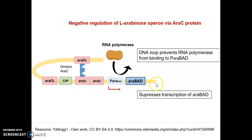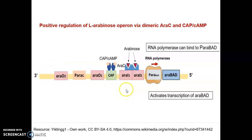Ultimately, the arabinose operon undergoes both negative regulation — where the araBAD genes are in the repressed state in the presence of glucose and absence of arabinose — and positive regulation, where the araBAD gene cluster gets transcribed in absence of glucose and presence of arabinose. Both positive and negative regulation play a crucial role in the utilization of arabinose in the absence of glucose. Thank you.